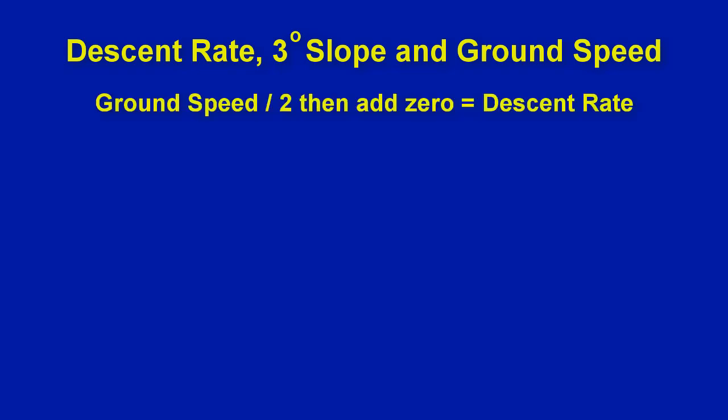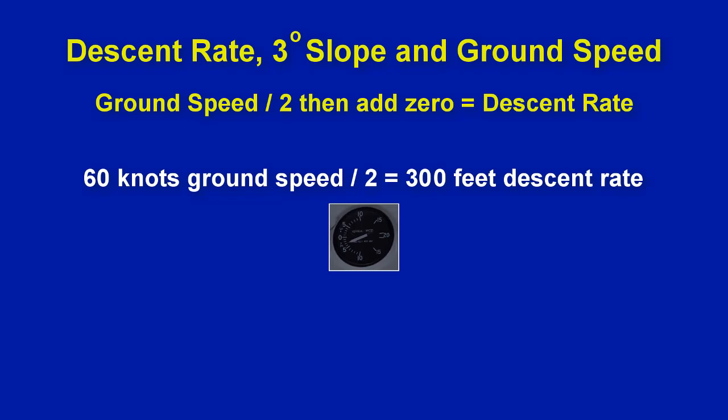The descent rate will vary depending on how fast you are moving over the ground, also known as ground speed, which can be different from what is showing on the airspeed indicator because of the effects of wind. There is an easy formula to determine the descent rate for a three-degree glide slope: take your ground speed, divide it by two, then add a zero. For example, if your ground speed is 60 knots, 60 divided by 2 equals 30, and adding a zero gives 300 — so a 300 feet per minute descent rate will keep you on a three-degree slope at 60 knots.